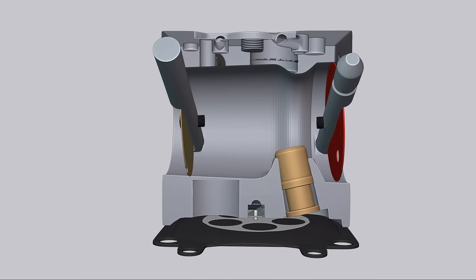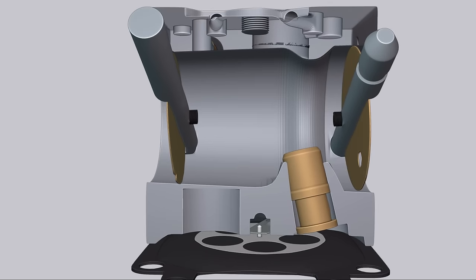To start a cold engine, close the choke. This contributes to the maximum vacuum in the carburetor diffuser, accelerating the filling of the fuel chamber with fuel.